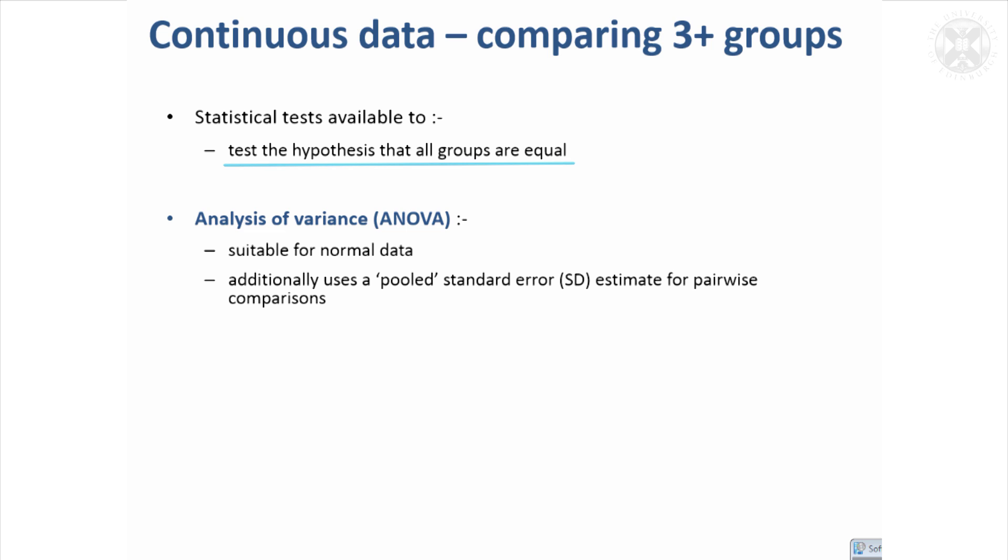A way of doing that that's been around for probably about 100 years now is something called analysis of variance, usually abbreviated as ANOVA. That's suitable for normal data.